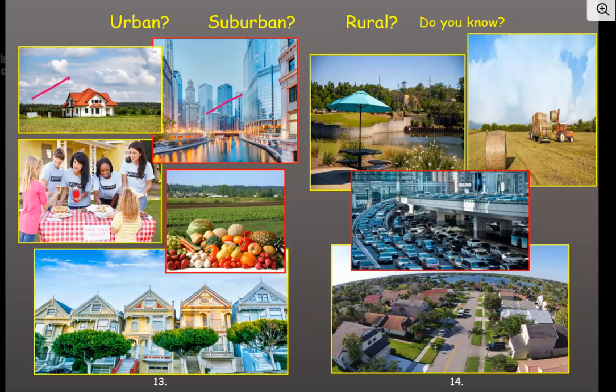What about this one? That's easy — that's definitely a big city, so that's urban. How about this? This could be suburban or urban. There are parks in urban areas, but I'm thinking it's probably suburban because I do see some buildings in the back, but they're not skyscrapers. I don't see any big, huge, tall buildings behind it, so I'm going to say suburban on that one.